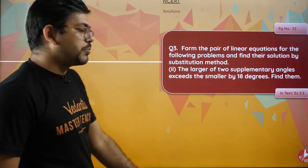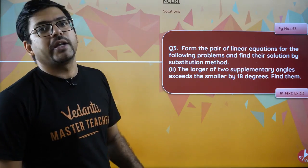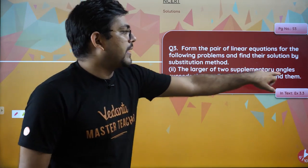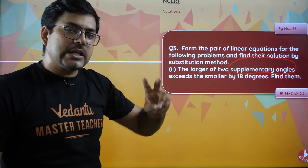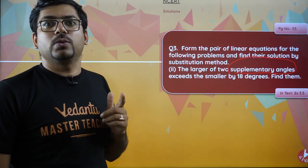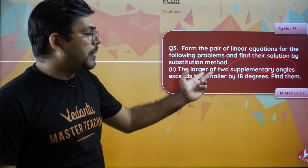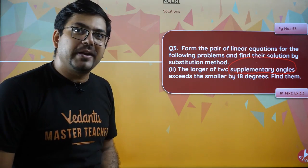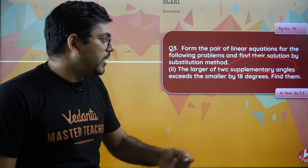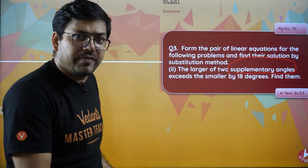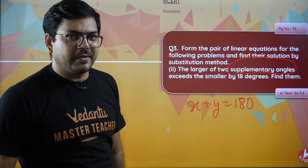Moving on to the second part. The question asks: the larger of two supplementary angles exceeds the smaller by 18 degrees. First, what are supplementary angles? Supplementary angles are two angles whose sum is 180 degrees. Since I don't know which two supplementary angles these are, I'll let them be x and y. By definition, x + y = 180 degrees. That is our first equation.